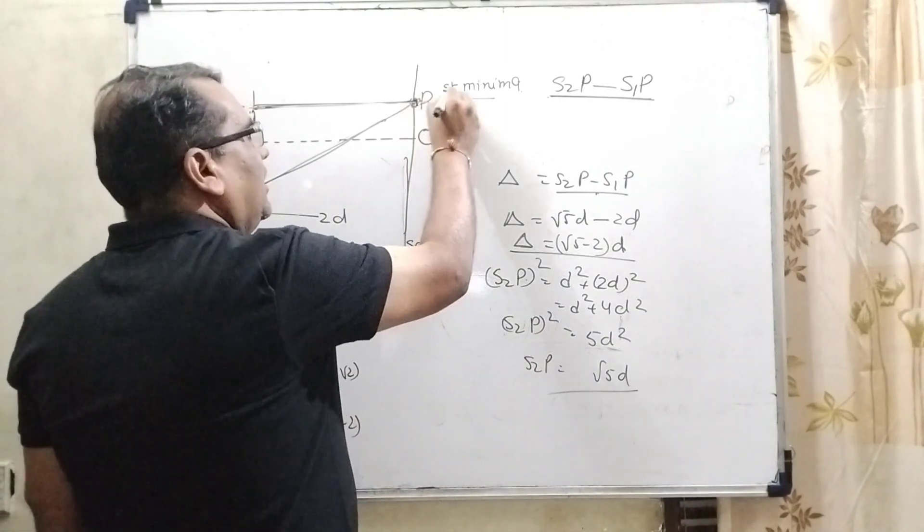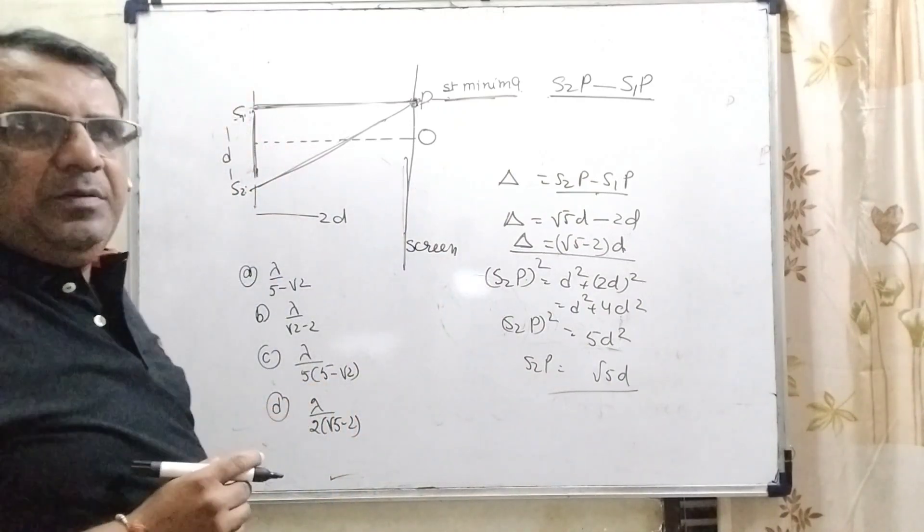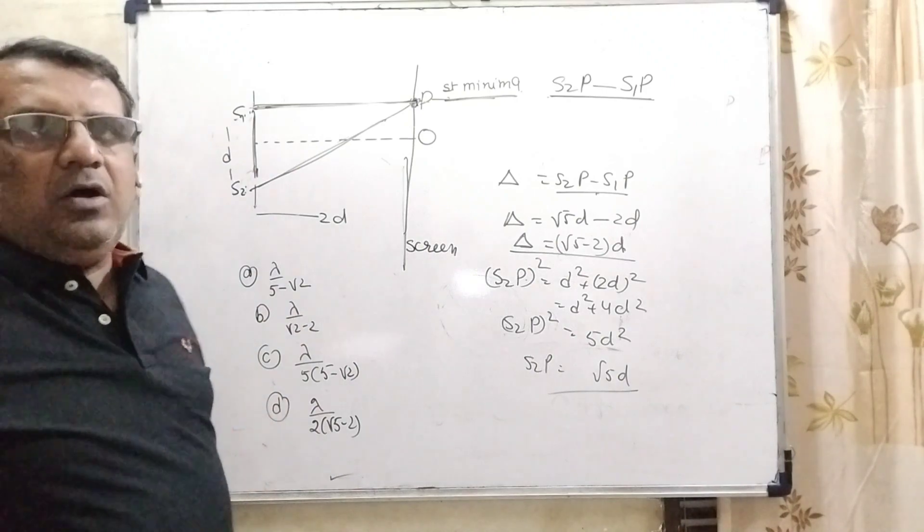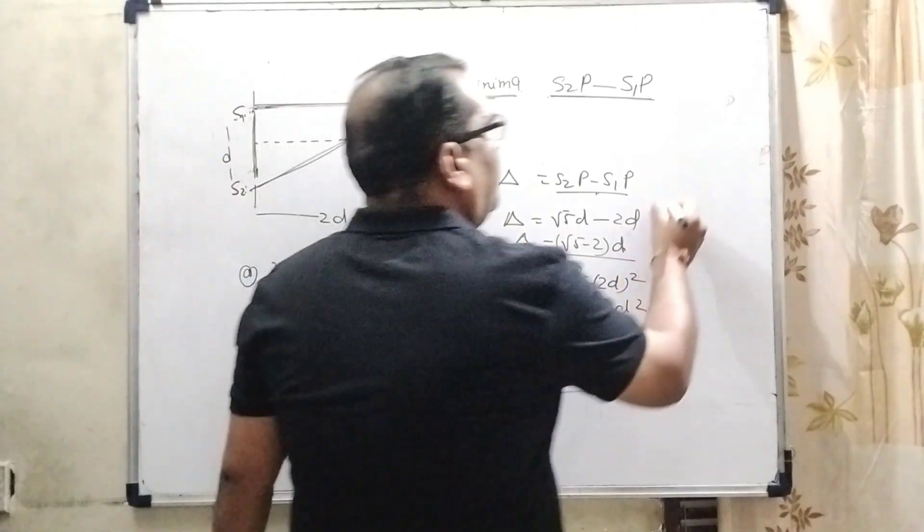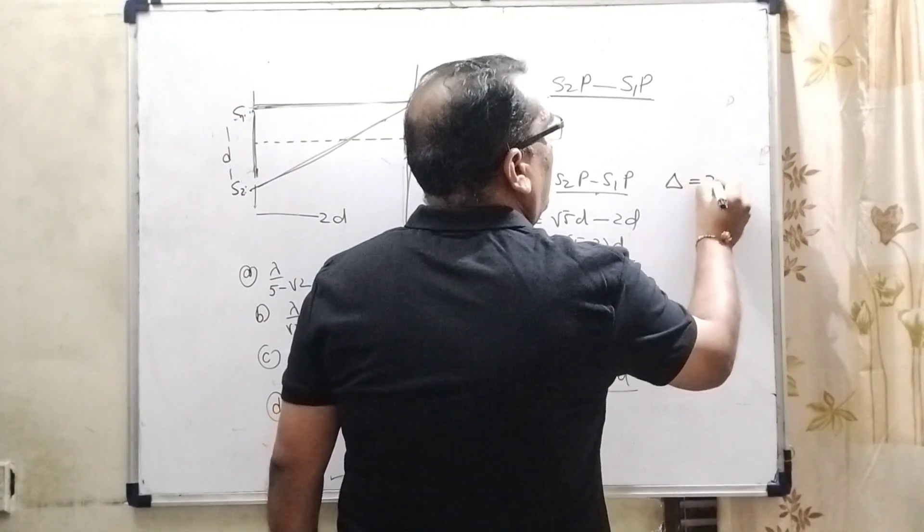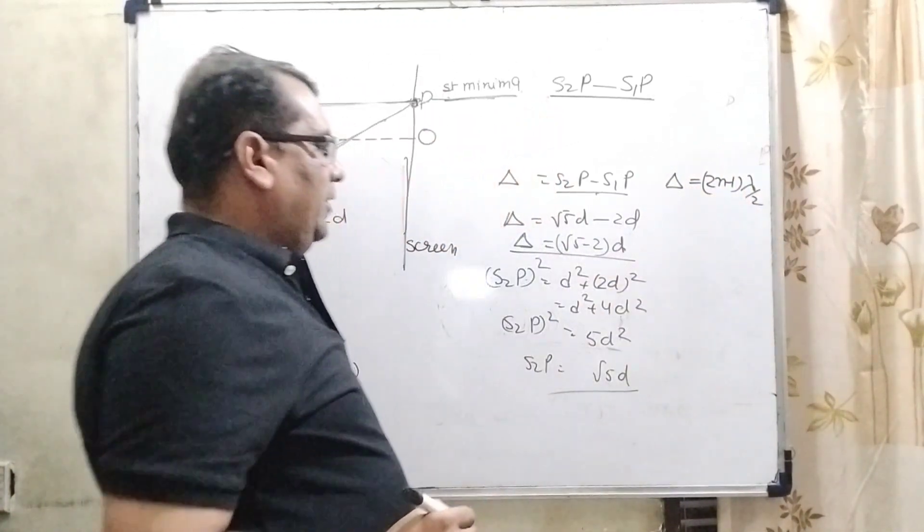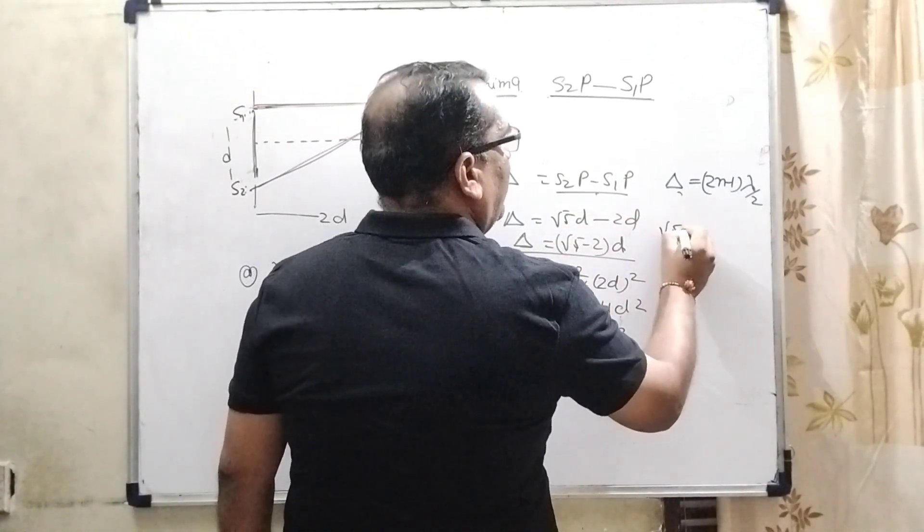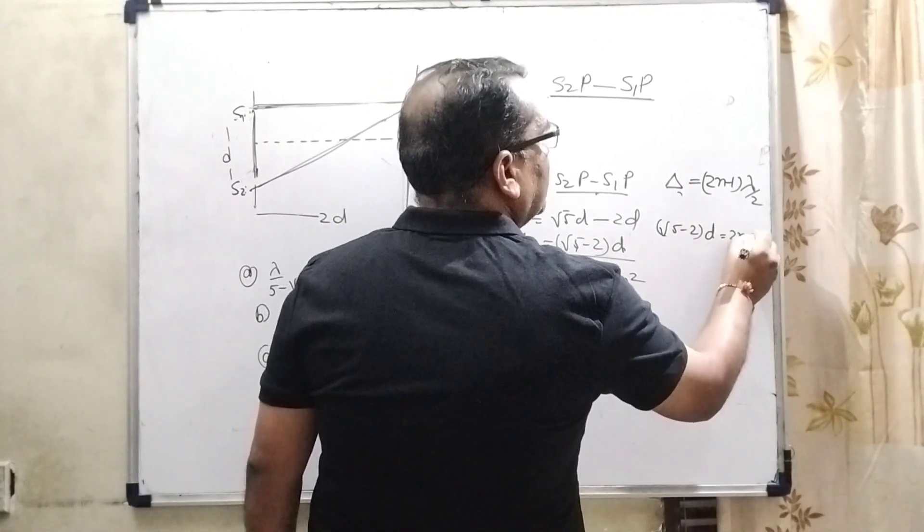But we know that here we have first minima. What does it mean? First minima means dark fringes are formed. That is odd multiple of lambda by 2. So, path difference equals odd multiple of lambda by 2. And we have already found the path difference, that is root 5 minus 2 into d.